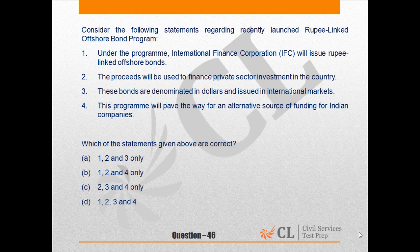So, with reference to the rupee linked offshore bond program, out of these four statements, statements 1, 2, and 4 are correct, while statement 3 is wrong. The claim that these bonds are denominated in dollars is incorrect — the denomination of these bonds is in Indian rupee, and they are issued in international markets.